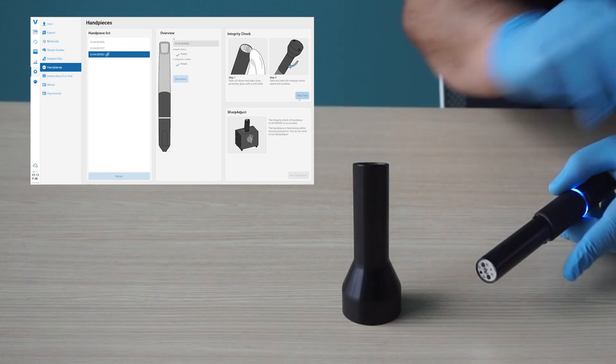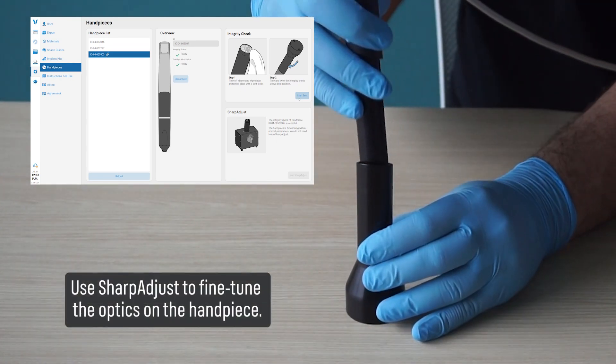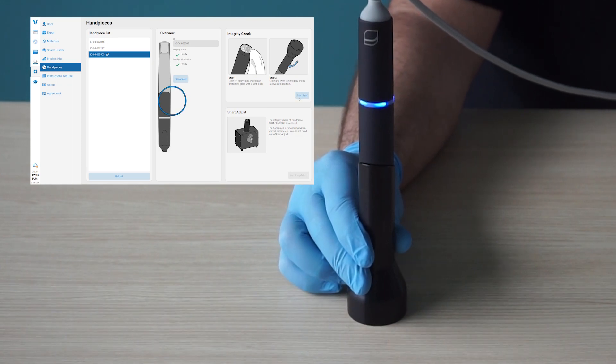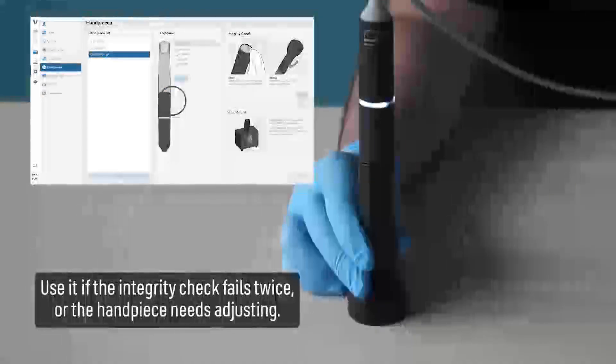Use Sharp Adjust to fine-tune the optics on the handpiece. Use it if the integrity check fails twice or the handpiece needs adjusting.